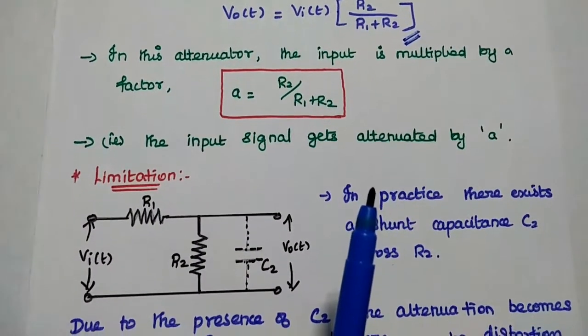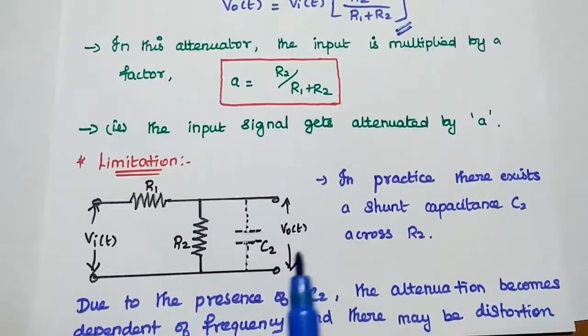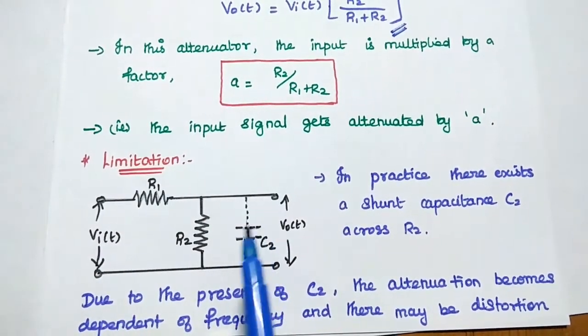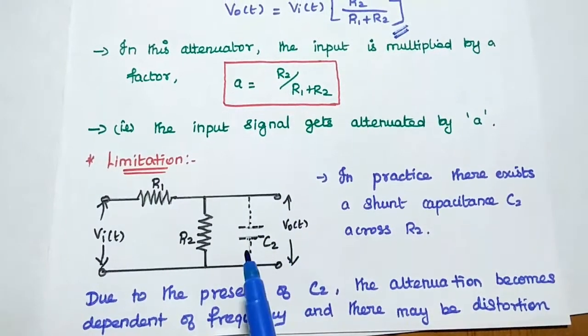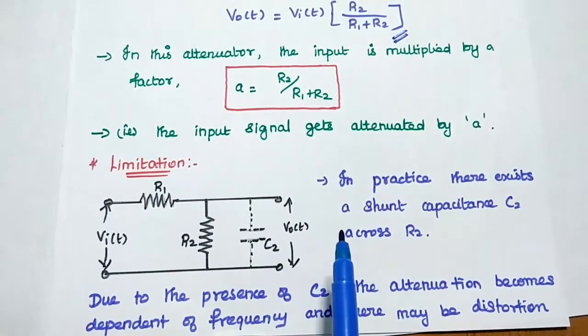In practical case there exists a shunt capacitance across this resistance R2. This capacitance can be used as input side of the next stage. The reduced attenuator can be given as input to this C2.